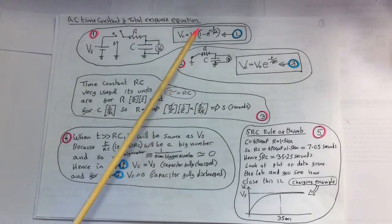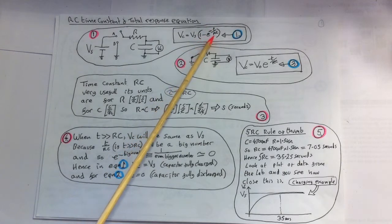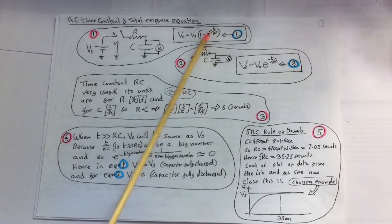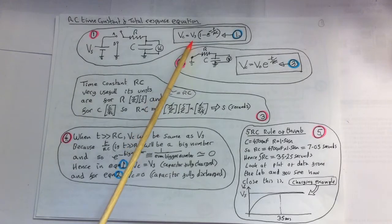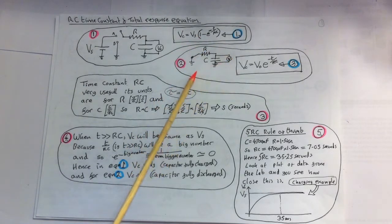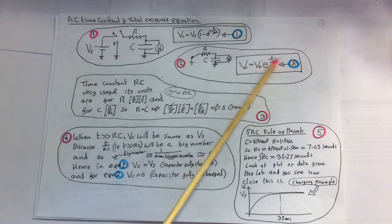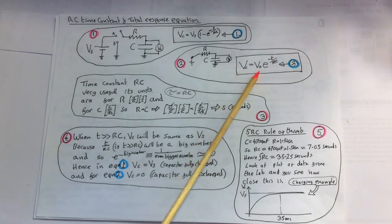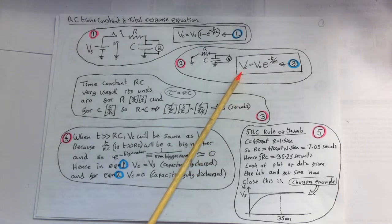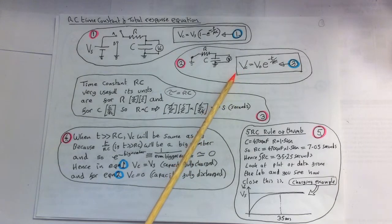And so for equation 1, with the e term going to 0 here, this term going to 0, then for equation 1, VC equals VS, and that's for the charging. And for the discharging, when this goes to 0, obviously the capacitor voltage is 0, so that makes sense, and we saw this in the lab.